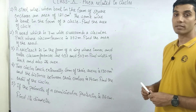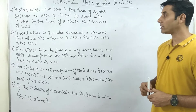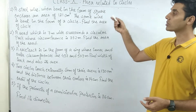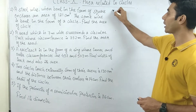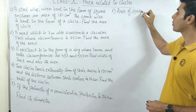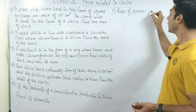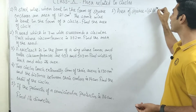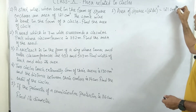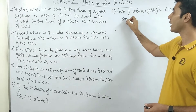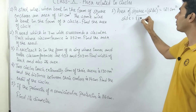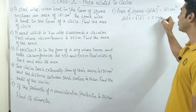The first question: a steel wire when bent in the form of a square. So the area of the square should be equal to side squared. That is given as 121 cm². So that means the side should be equal to the square root of 121, which is 11 cm.